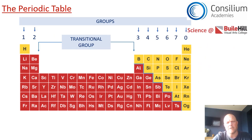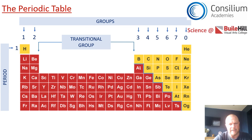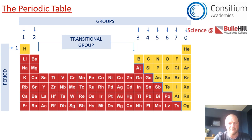Instead of reading from top to bottom like we do in a group, we can also read from left to right like you would in a book. If we read from left to right, we're reading along a period. So in period one, which has H in it, if you trace your finger all the way to the right hand side, you also have He. So hydrogen and helium are found in period one of the periodic table. Periods go from top to bottom: one, two, three, four, five, six, and seven.